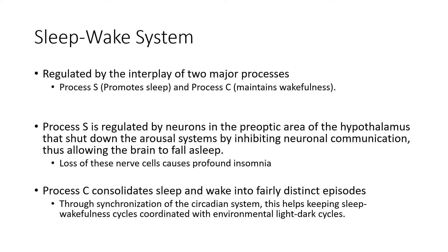Process S is regulated heavily by neurons within the hypothalamus that shut down arousal systems and ramps up closer to nighttime. It basically inhibits or slows down neural communication, which allows the brain to fall asleep with less arousal. We're finding that loss of some of these nerve cells in the hypothalamus may actually contribute to insomnia — in their absence, we would see profound insomnia. It's also important to note that Process C, while promoting wakefulness, actually helps consolidate sleep and the sleep-wake cycles into distinct episodes. We need these in balance — we don't want to be asleep all day or awake all day. The synchronization mediated through the circadian system keeps sleep and wakefulness coordinated with light and dark cycles.